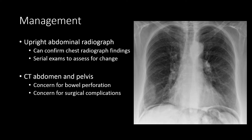When free intraperitoneal air has been detected or suggested on a chest radiograph, consider an upright abdominal radiograph to confirm the chest radiographic findings. You can also use an upright abdominal radiograph to assess for change in volume, and at times it can better differentiate gas within the colon, stomach, or colonic interposition from free intraperitoneal air. If the patient has acute symptomatology or clinical decline, consider a CT abdomen and pelvis with oral and IV contrast, as this will increase the sensitivity of the exam for bowel perforation and other etiologies for free intraperitoneal air.